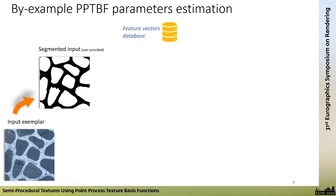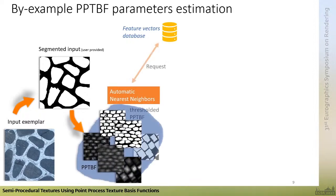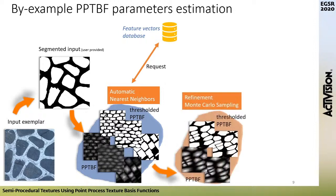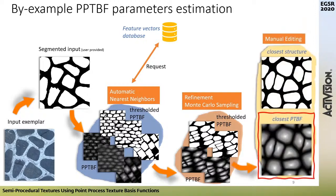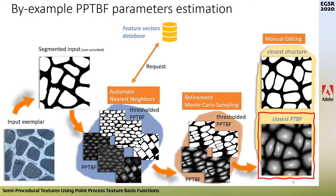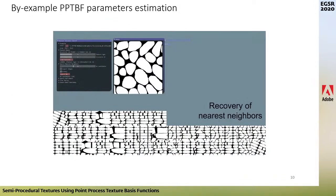Here is our complete pipeline. Given the segmented input, we query the feature vector database for the closest candidates using approximate nearest-neighbor search with brute force or FLANN library. Based on these candidates, we refine further by Monte Carlo sampling to find a new PPTBF and thresholded version. The user then selects the best result and finishes with manual editing. Here is a video showing our pipeline.